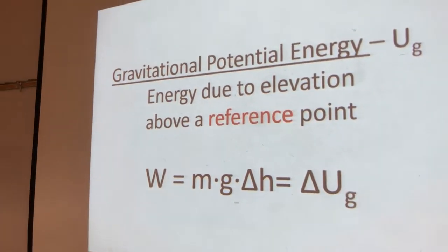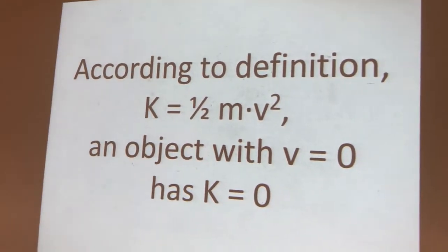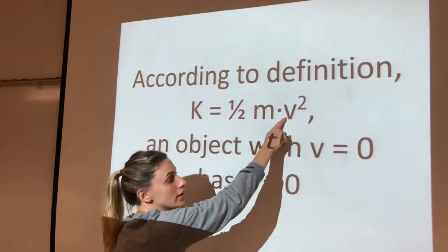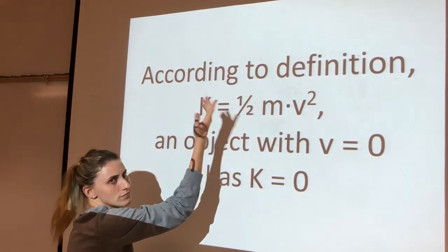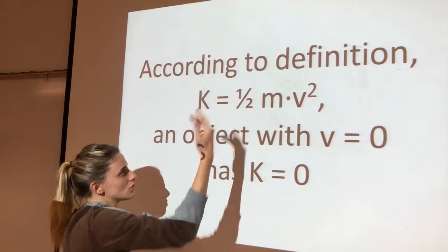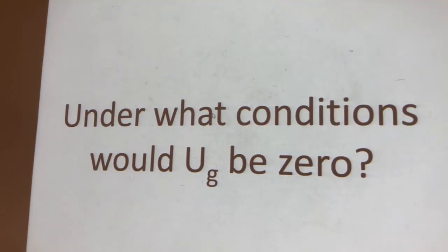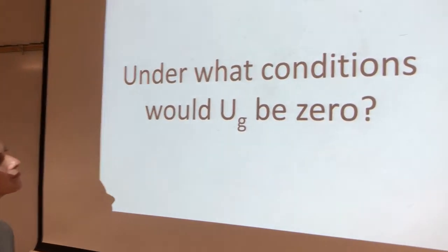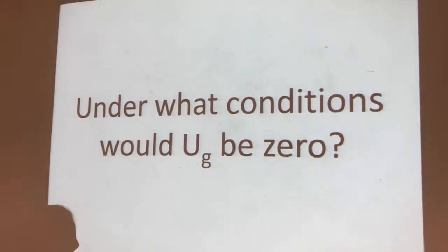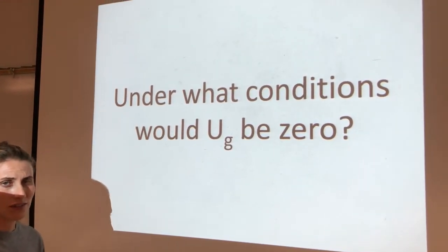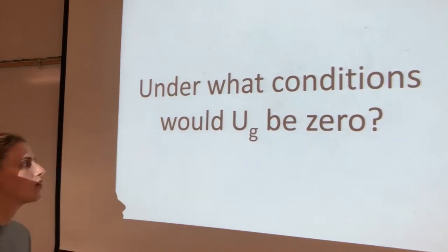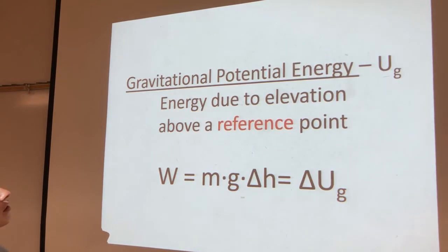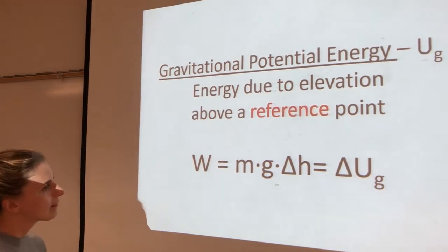According to the definition, kinetic energy equals one-half mv squared. An object with an initial velocity of zero has zero kinetic energy. It's not moving. But what about Ug? Under what conditions would Ug be zero? Well, you get to choose. If I think about that equation, mg∆h, it's the change in height that matters. It's a change in height that matters, not where you start or stop.